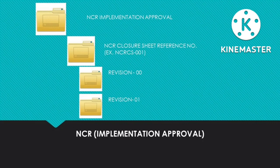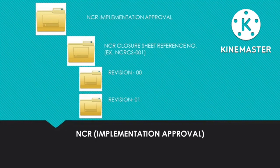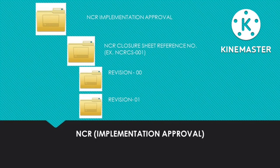In one NCR number folder, there will be a subfolder for proposal and a subfolder for implementation. Inside each subfolder, you also need to put the revisions because sometimes the proposal will be rejected and the implementation will also be rejected. You need to put the revision inside each subfolder so it is clear when they are asking for the NCR number — what is the status of the closure sheet — and they will see the proposal and the implementation in one place.